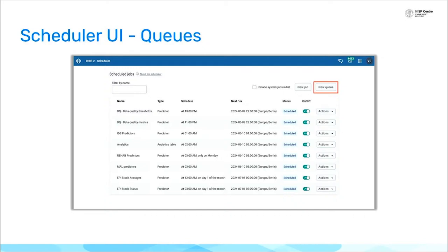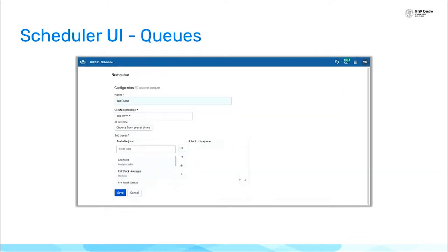Another area — sometimes painful and sometimes overlooked — is scheduling jobs. We have now introduced queues to the scheduler UI app. If you've ever had to run an analytics table app and wait for it to finish before running something else, or try to guess the time it will have finished, you don't have to do that anymore. You can create a queue and set one job to finish first before the next job kicks off, taking the guesswork out of running those long jobs.